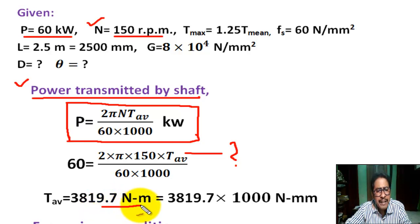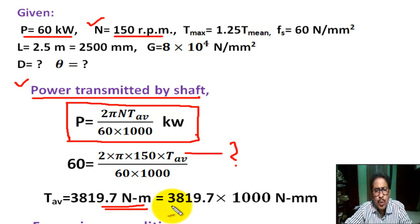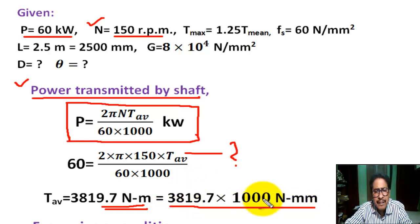T_average is found as 3819.7 Newton meter. Now we convert it into Newton millimeter by multiplying by 1000.